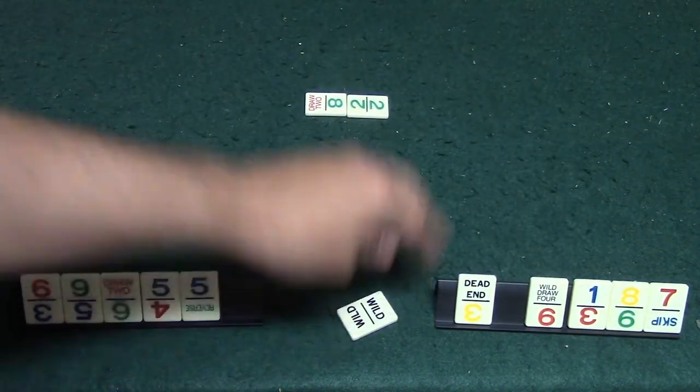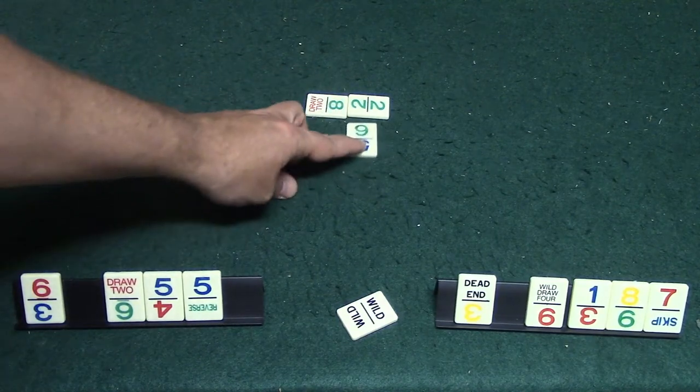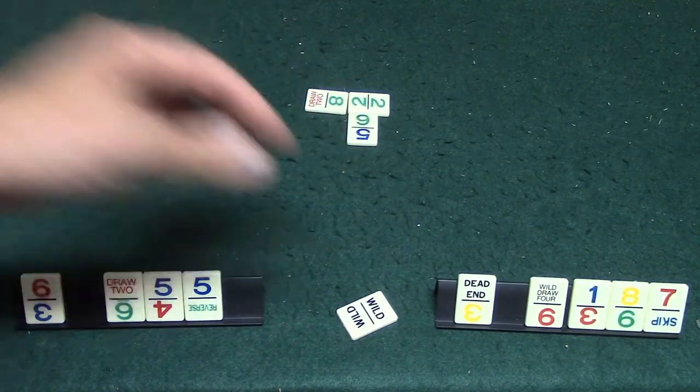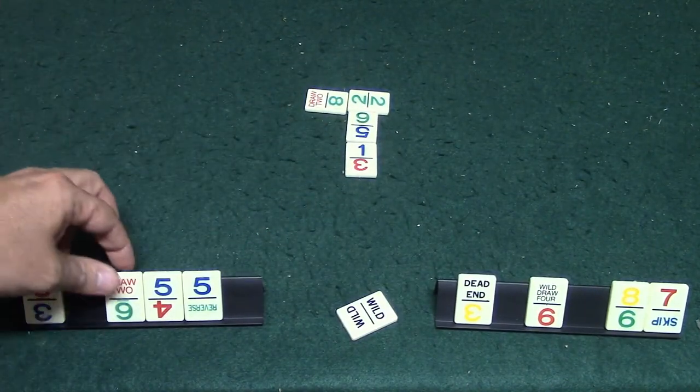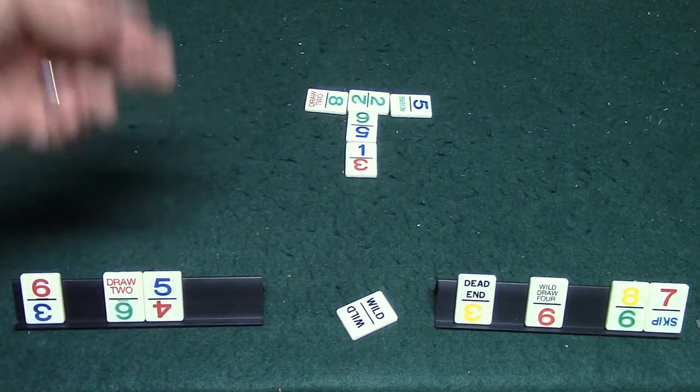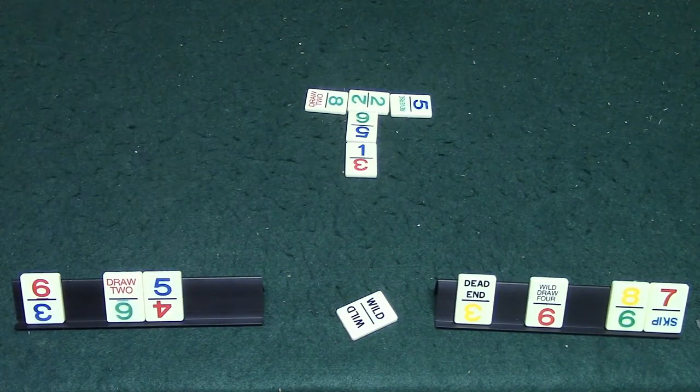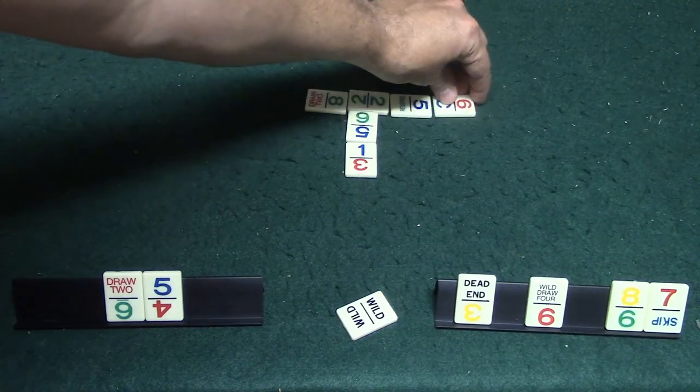So let's just say it goes back to player one over here and he decides he's going to go ahead and play this. Player two decides he's going to go ahead and play this. Player one goes back and he decides okay he's going to play the reverse right here. Now since it is a two player game that means he will get to go again, and let's just say for example he decides he's going to play this.